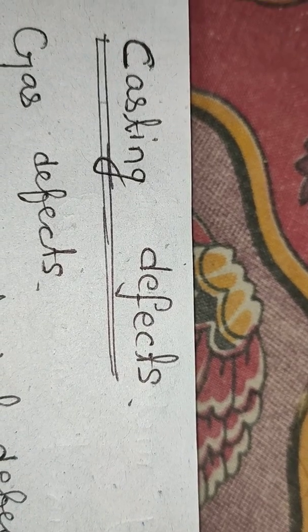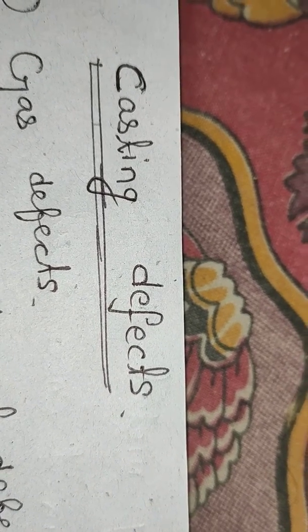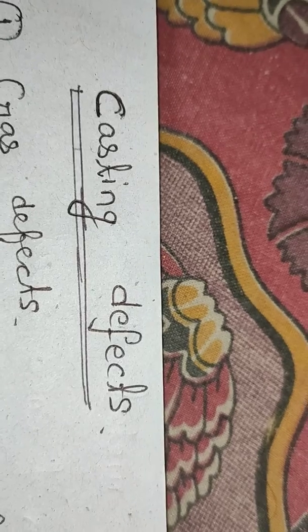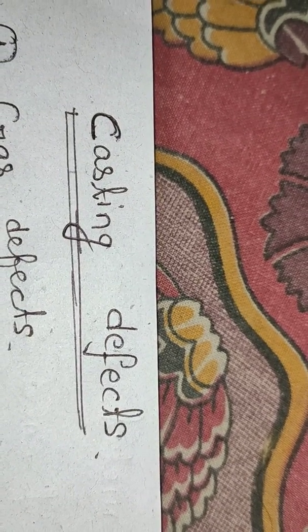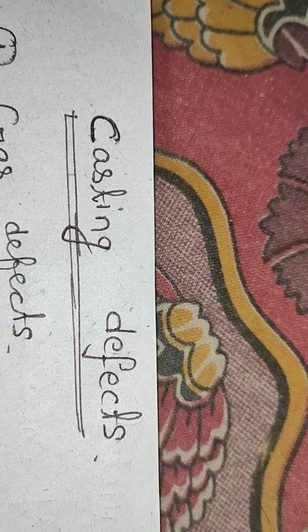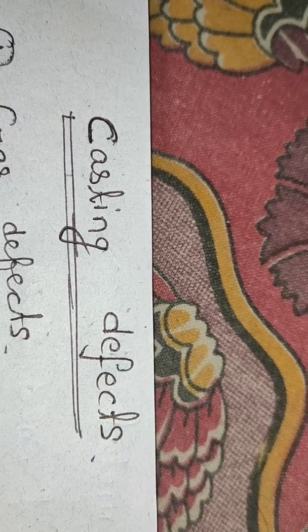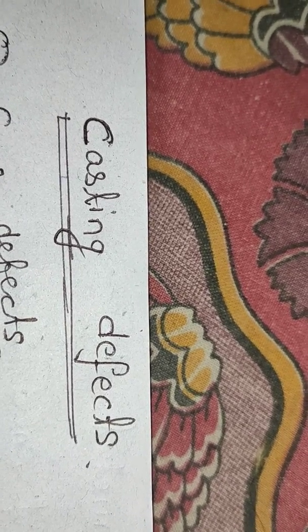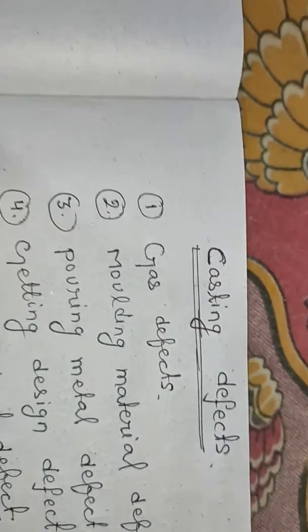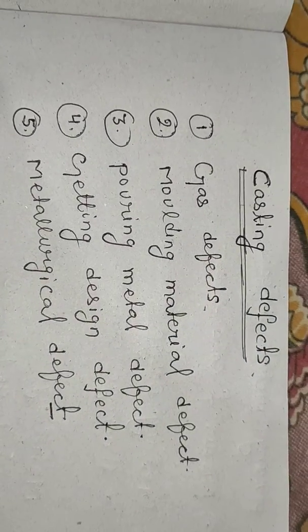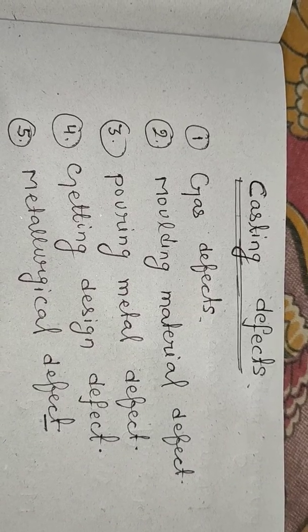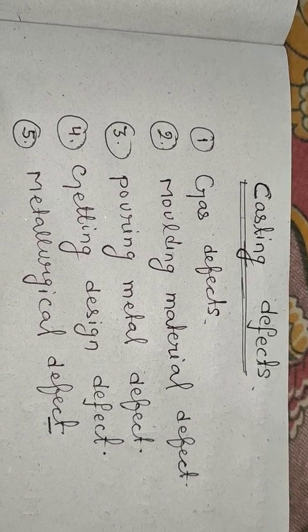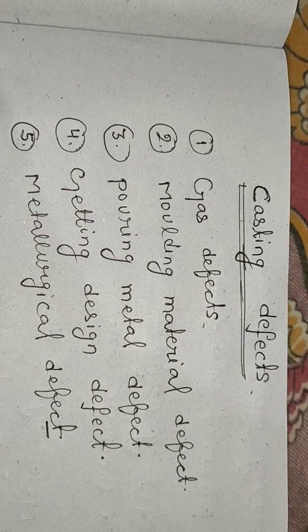Good morning friends. Today we are going to study casting defects. What is a casting defect? Generally during casting, many defects occur. We will study the types of casting defects. First defect is gas defect, second is molding material defect, third is pouring metal defect, fourth is casting design defect, and fifth is metallurgical defect.